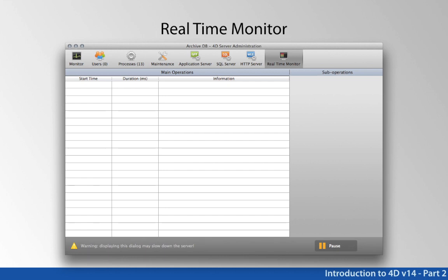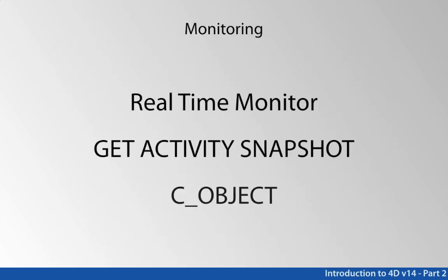That's what the real-time monitor is all about — giving you a tool to see what the server is doing now and what kinds of things you might be able to fix in real time without taking the system down. All the data you see in the real-time monitor is also available through a command called getActivitySnapshot, which returns a C object. You can even export it out to JSON text or manipulate it as a C object.